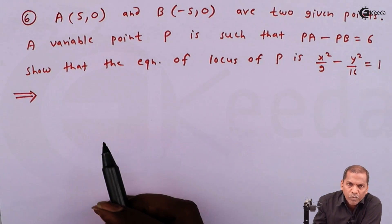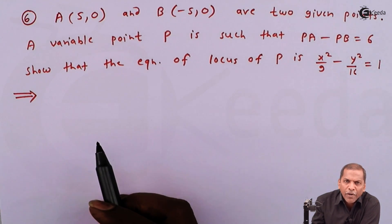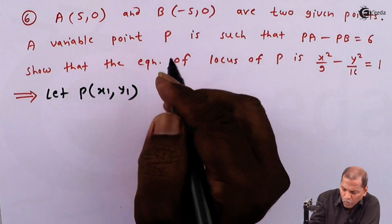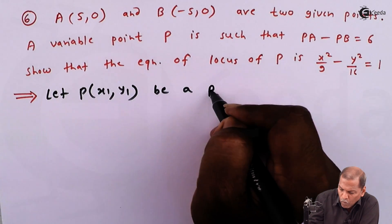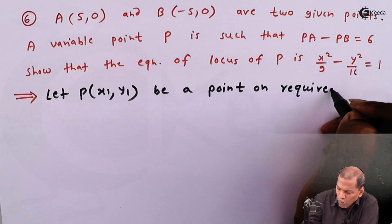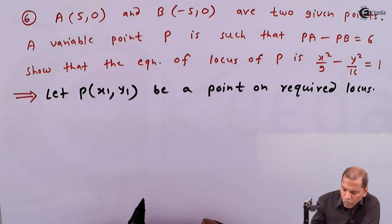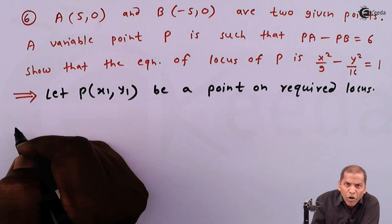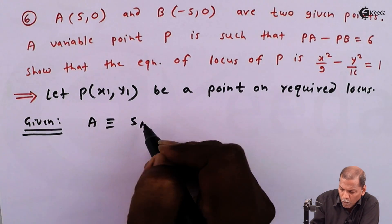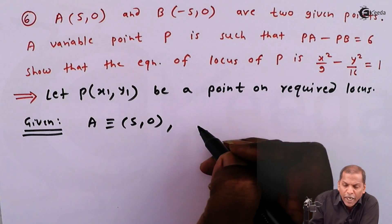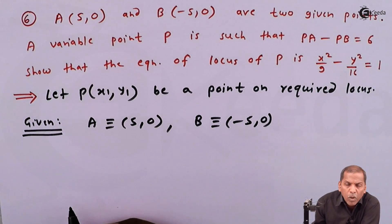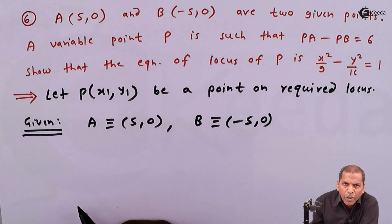Now let's see the solution. Let P at (x1, y1) be a point on the required locus. Also given A is equivalent to (5, 0) and B is equivalent to (-5, 0), and the main condition is that PA minus PB is equal to 6.